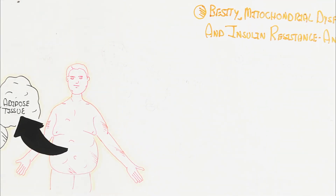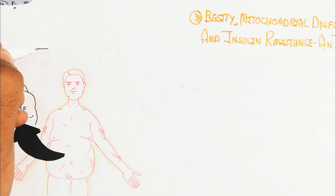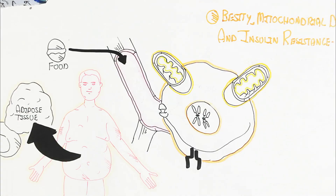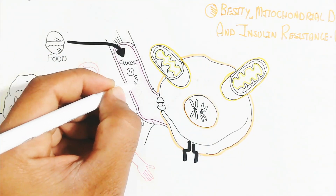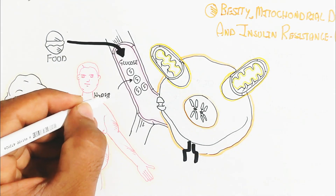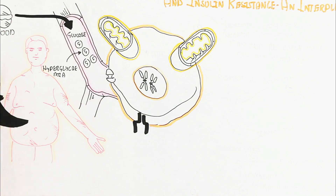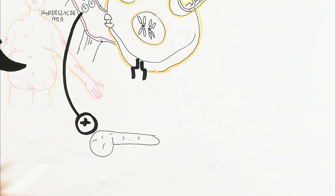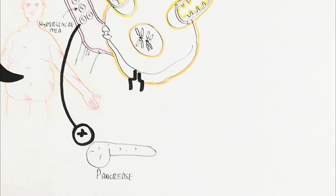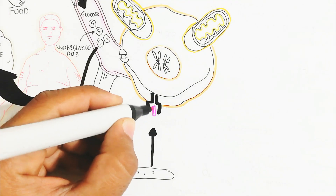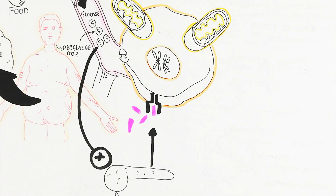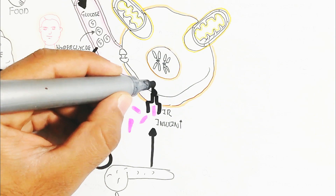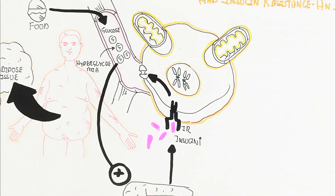Let's learn about the mechanism of the adipocyte for normal metabolism. In the blood circulatory system, when we eat food, glucose is absorbed and hyperglycemia occurs. Hyperlipidemia also occurs, which triggers the pancreas. The beta cells of the pancreas produce more insulin. The elevated insulin binds with the insulin receptor — a tyrosine kinase receptor — which activates the GLUT4 channel, and the adipocyte absorbs glucose via facilitated diffusion.